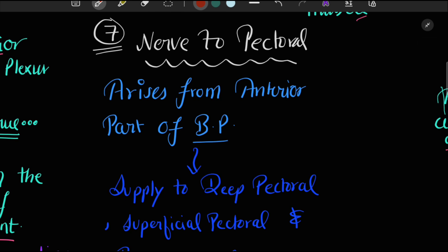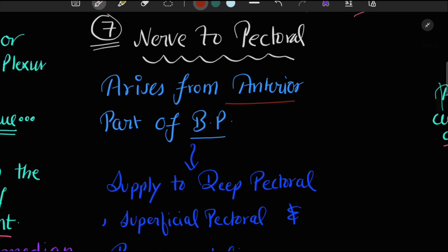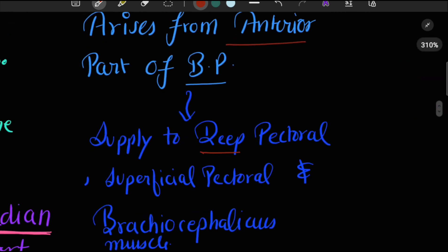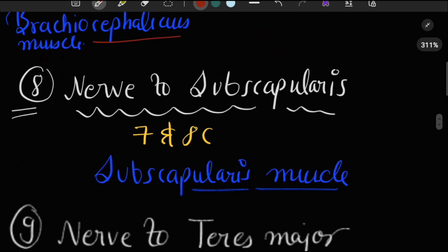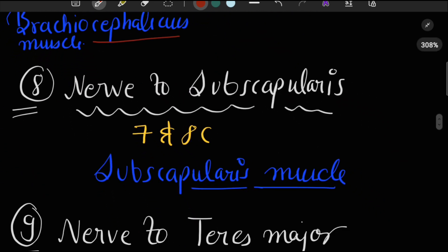The seventh branch is the nerve to the pectoral. It also arises from the anterior part of the brachial plexus and supplies the deep pectoral, superficial pectoral, and brachiocephalicus muscles.